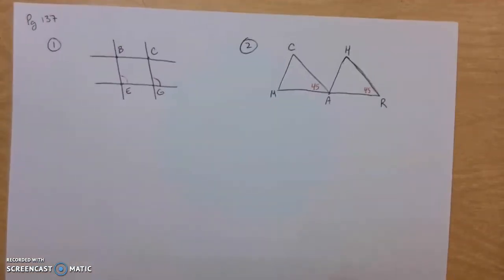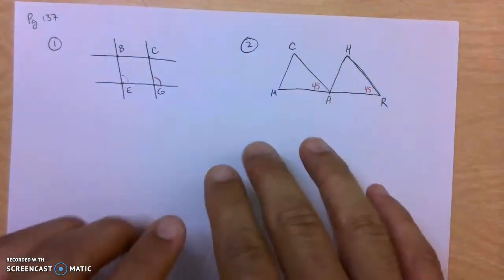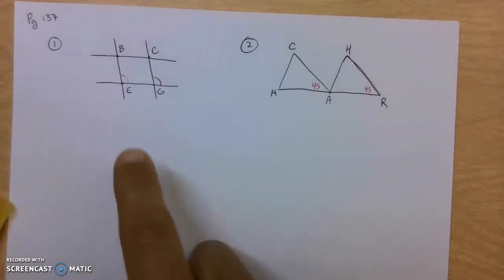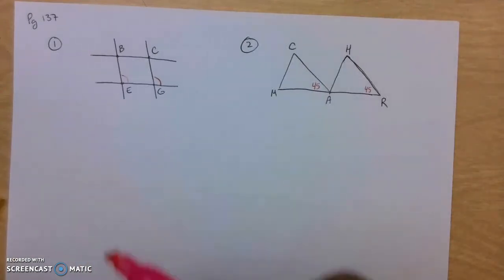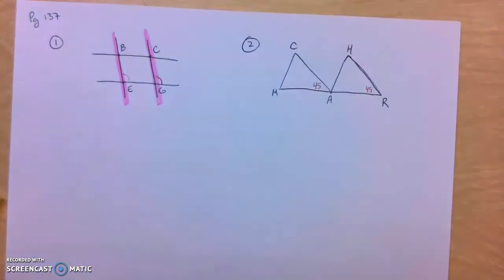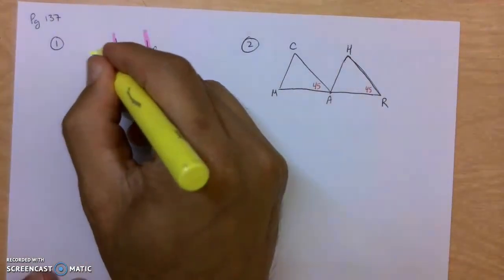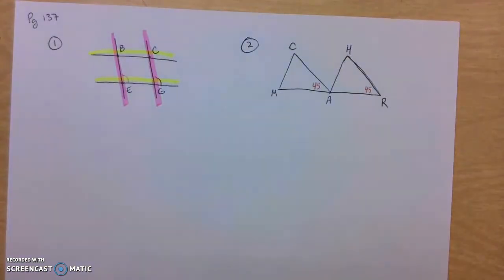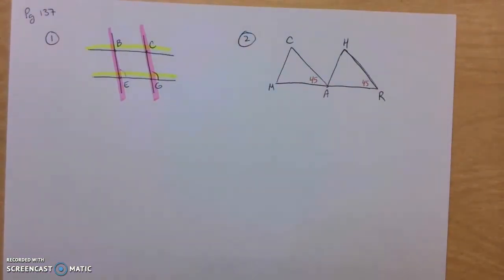Basically, everything in the picture kind of looks parallel, but really you're going to pick two lines that really are parallel based on the angles given. So if you're looking at number one here, is the pink lines parallel? You don't go by they look parallel, or are these yellow lines going left to right parallel? The way you're going to figure this out is based on the tick marks, and there's one tick mark provided here in the picture.